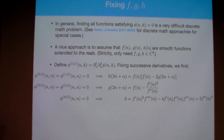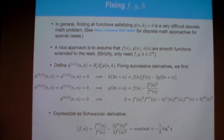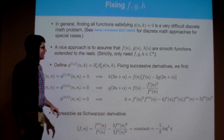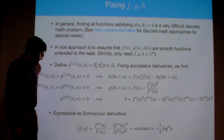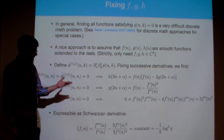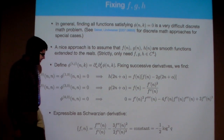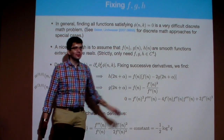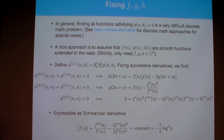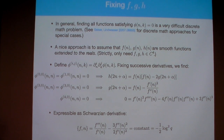In general, finding F, G, and H given P is a really hard discrete math problem. A particularly nice approach is to assume F, G, and H are functions on the reals — smooth, or at least four-times differentiable. Defining derivatives of phi with respect to n and k, and setting phi identically to zero, fixing successive derivatives gives relations for H in terms of F and G, then G in terms of F, and finally a fourth-order differential equation for F.